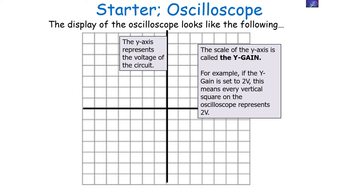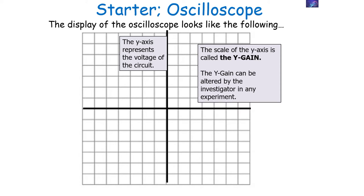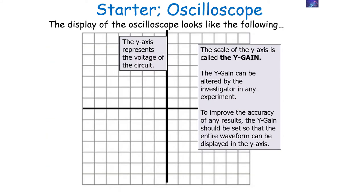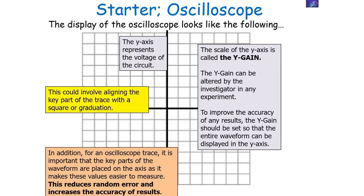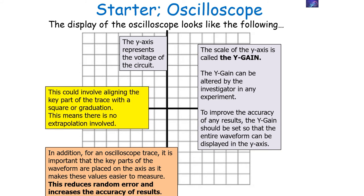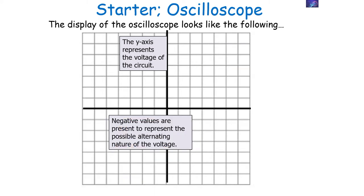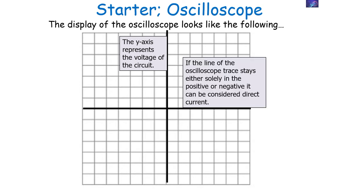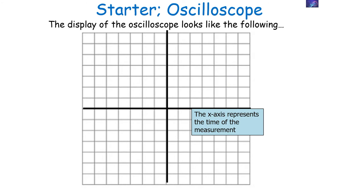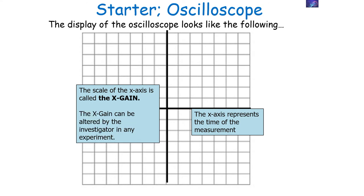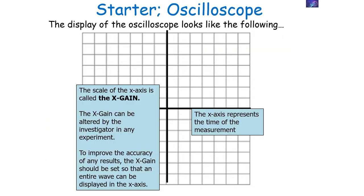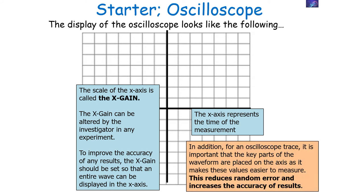The y-gain can be altered by the investigator to improve results — the entire waveform should be displayed on the y-axis, and key parts of the waveform should be placed on the axis to reduce random error and increase accuracy. Negative values represent the alternating nature of the voltage; if the trace stays solely positive or negative, the supply is direct. The x-axis represents time, and the scale is called the x-gain — for example, if the x-gain is set to 20 milliseconds, every horizontal square represents 20 milliseconds. You should alter it so the entire waveform is displayed and key parts fall on the axis to reduce random error.